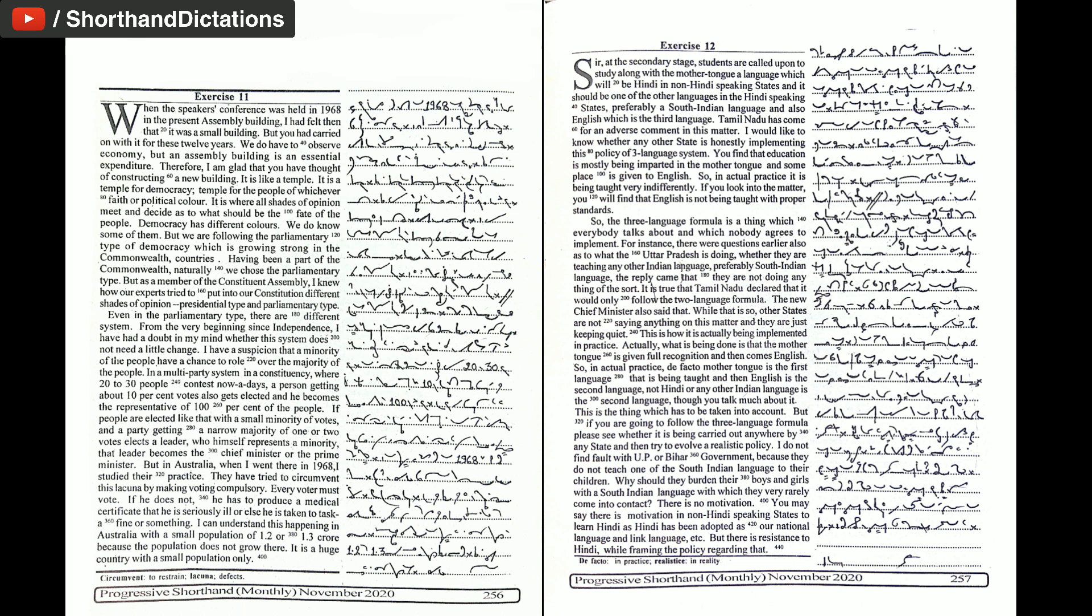They have tried to circumvent this lacuna by making voting compulsory. Every voter must vote. If he does not, he has to produce a medical certificate that he is seriously ill or else he is taken to task with a fine. I can understand this happening in Australia with a small population of 1.2 or 1.3 crore because the population does not grow there. It is a huge country with a small population.